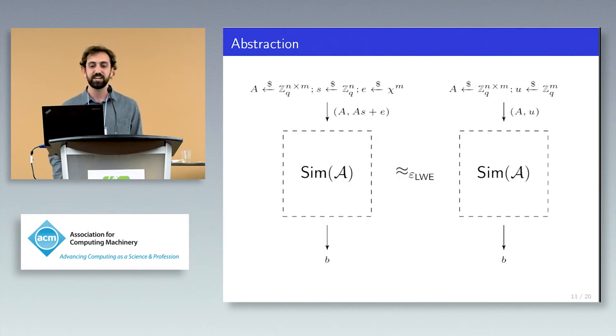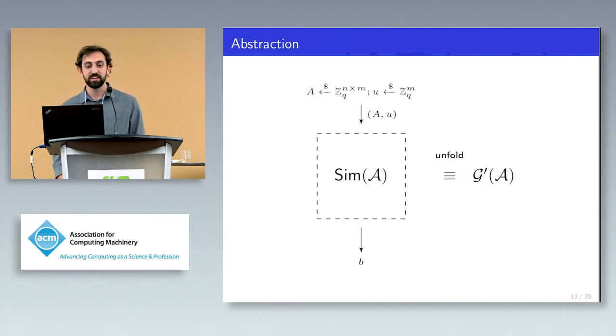The simulator will be a PPT adversary whenever A is, so we may plug the simulator into the hardness assumption which allows us to replace the input the simulator with uniformly random values, incurring some security loss coming from the hardness assumption. We may then unfold this transformed simulator to get a new hybrid G prime in which the LWE samples are replaced with uniform.